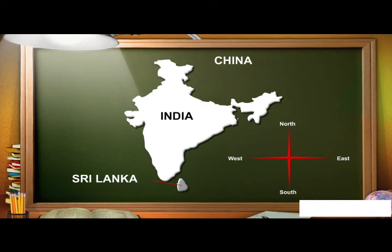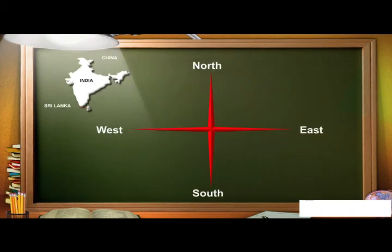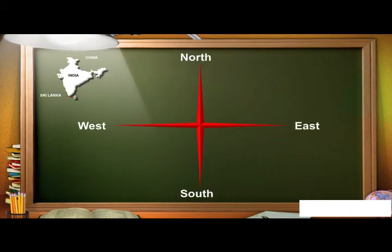We also know that sun rises in the east and sets in the west. There are four main directions. They are North N, South S, East E, and West W.